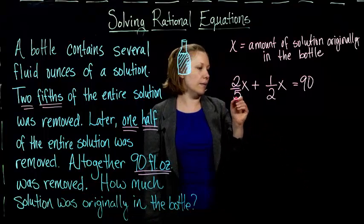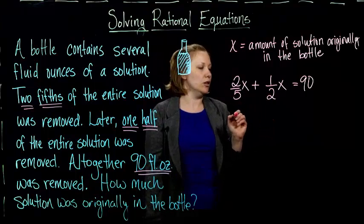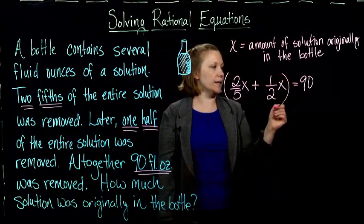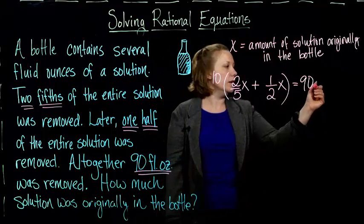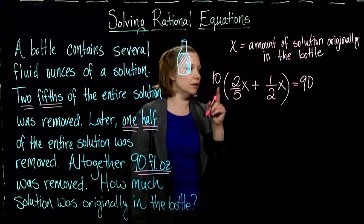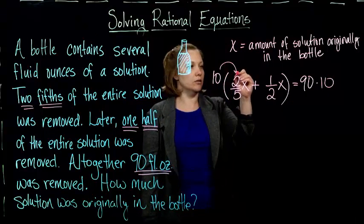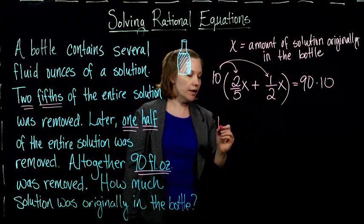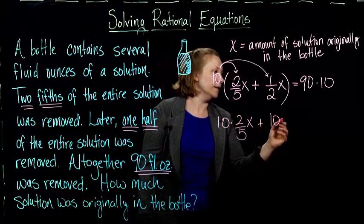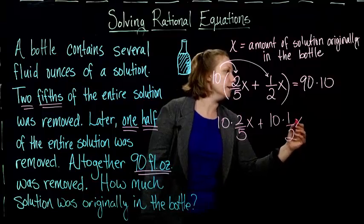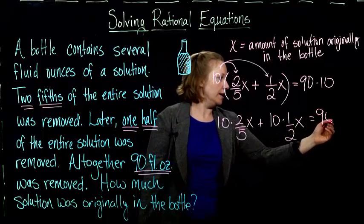I've got a 5 and a 2 in the denominator here, and I want to get rid of those denominators. So I can multiply on both sides by 10, because 10 is the least common denominator between the 5 and the 2. If I multiply by 10 on this side, I have to multiply by 10 on the other side as well. I'm going to distribute that 10. I get 10 times two-fifths X plus 10 times one-half X equals 90 times 10. 90 times 10 gives me 900.